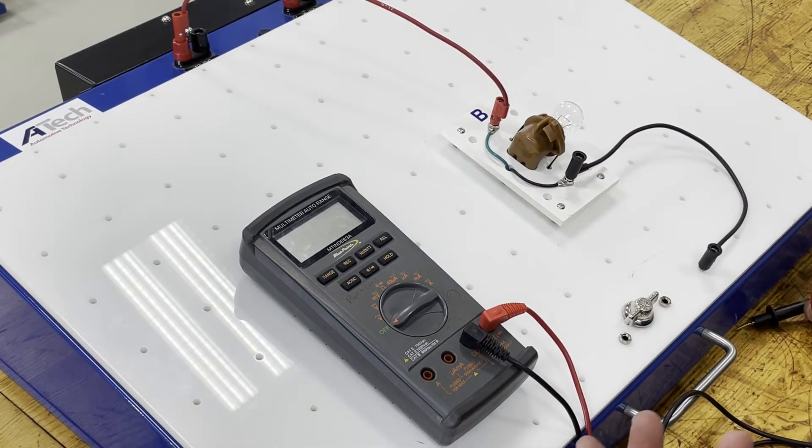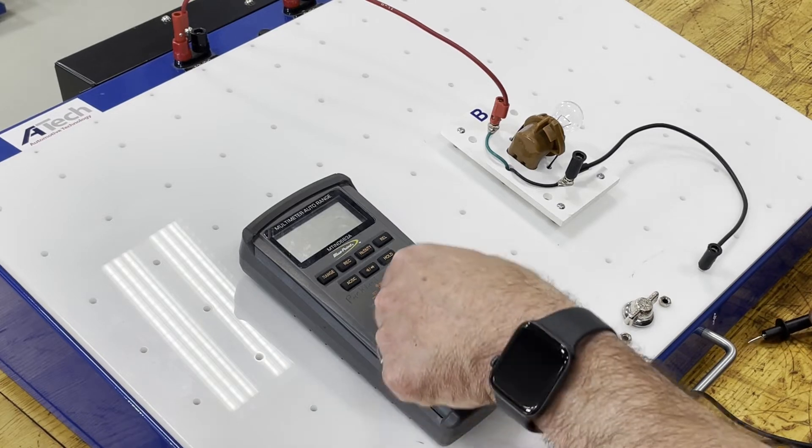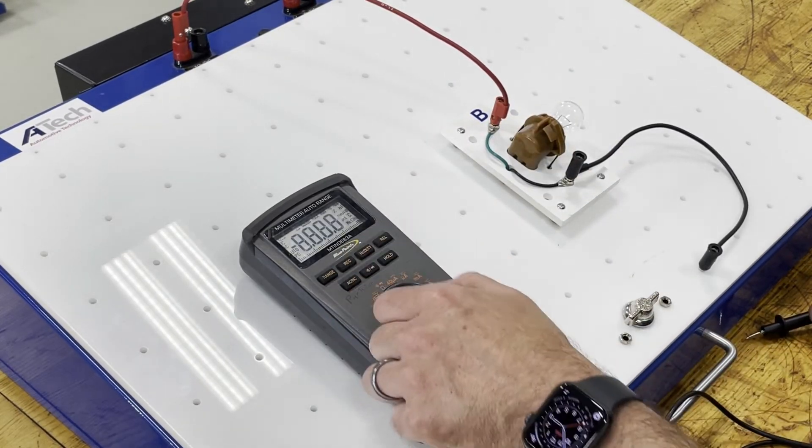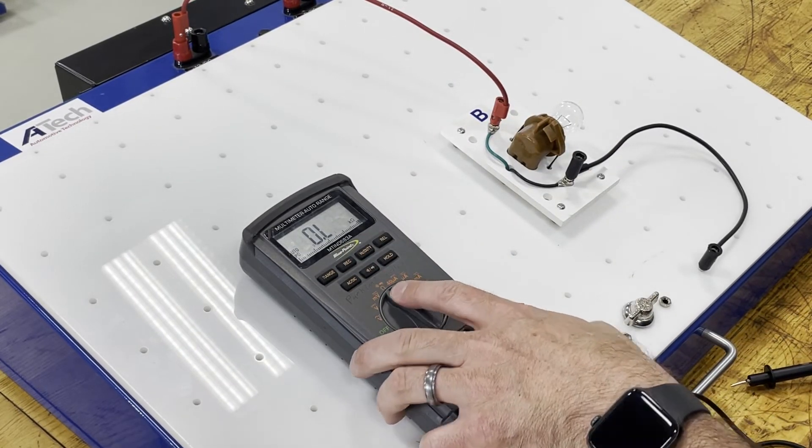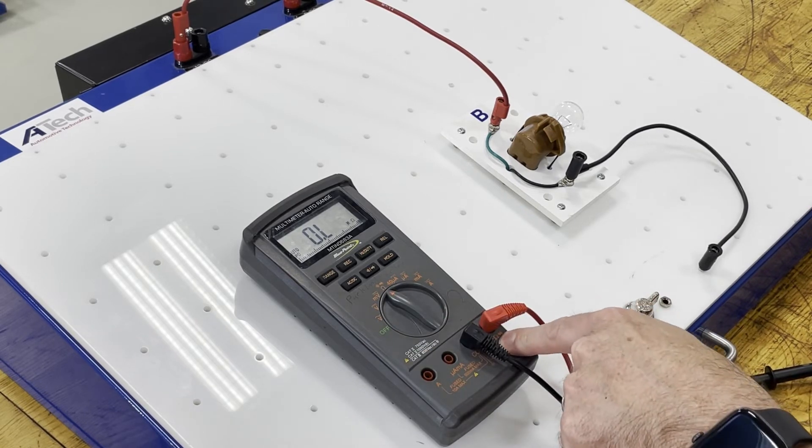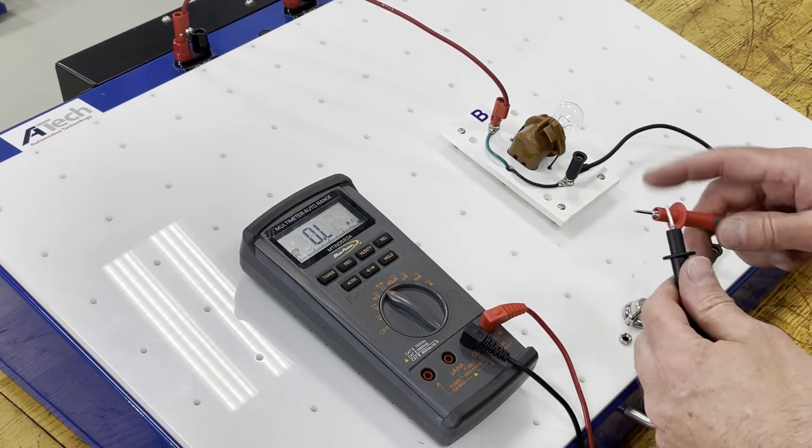The next test that I can do is measure resistance and so much like we did to verify integrity of the leads I go to my Omega symbol there make sure I'm in the Omega port at the base and I could take my leads.